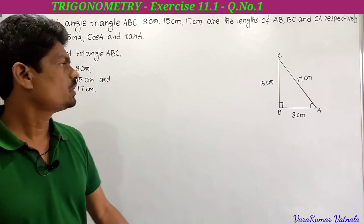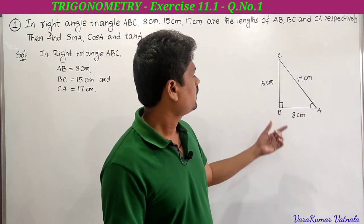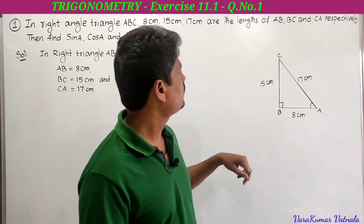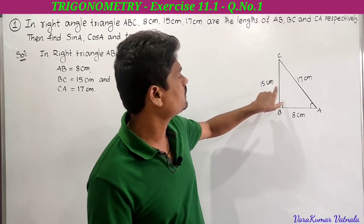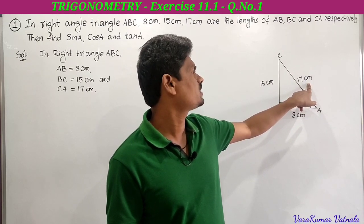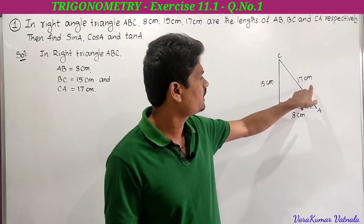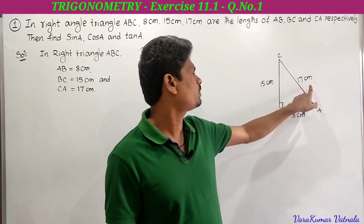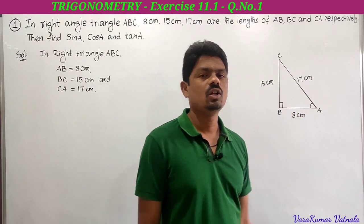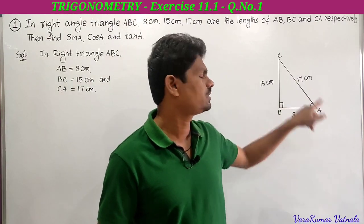So let ABC be a right angled triangle. He has given AB is equal to 8 centimeters, BC equal to 15 centimeters, CA equal to 17 centimeters. CA is 17, the longest side, hence angle B must be right angle. The angle opposite to the hypotenuse must be a right angle, so here angle B is the right angle. He is asking to find sine A.